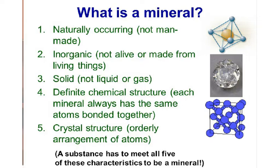So in order to be categorized as a mineral, there's actually five things that the mineral has to have. The first one is that it's naturally occurring, meaning it's not man-made. It has to be inorganic, which means it's not alive or made from things that were living. It has to be a solid, so no liquids or gases. Five is crystal structure, meaning it has an orderly arrangement of atoms. And number four: it has to have a definite chemical structure, meaning each mineral is always bonded together with the atoms in the same way - think of it like molecules that always get put together in the same way.